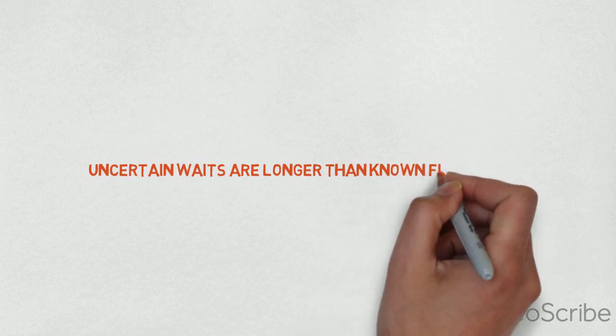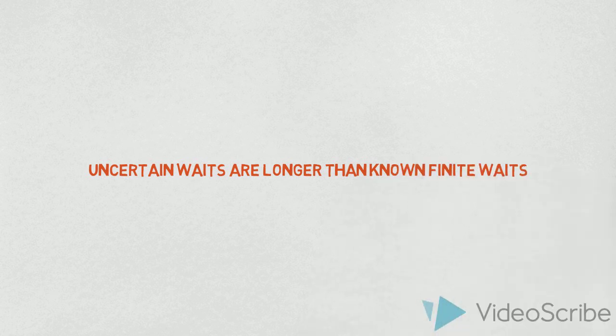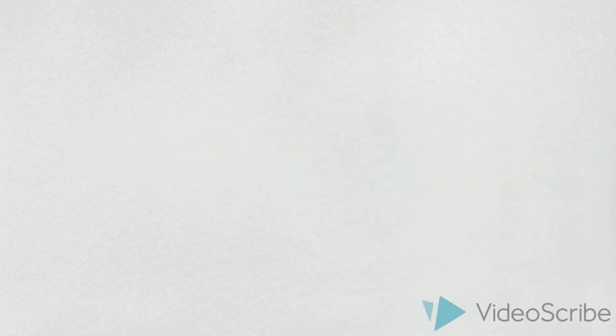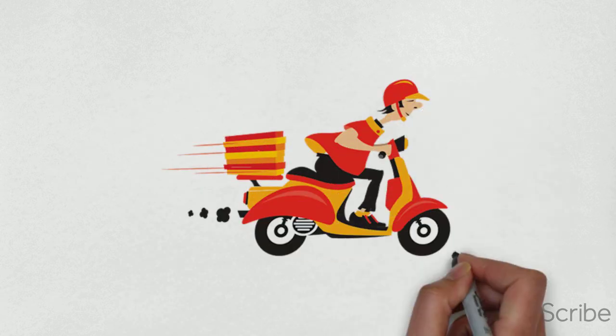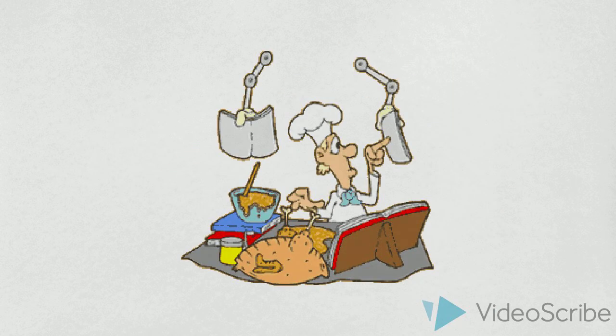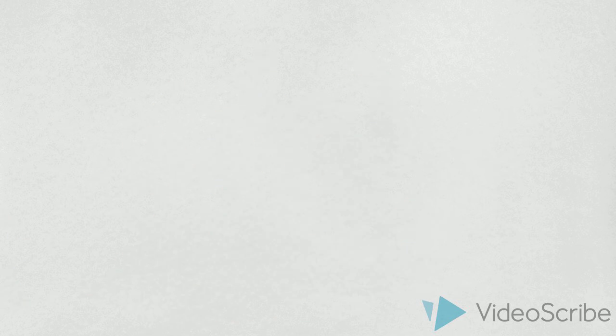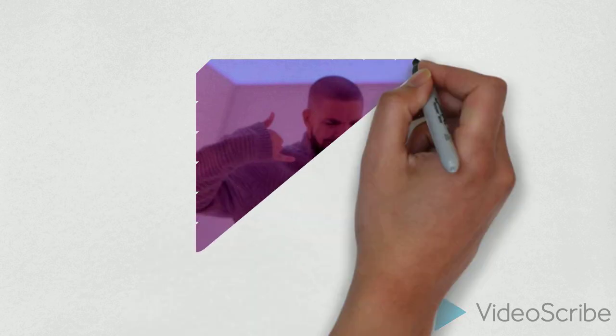The fourth point here is that uncertain waits are longer than known and finite waits. Imagine you are hungry and decide to order food home. The person on the other end of the phone tells you that they have a lot of pending orders and they will deliver it as soon as possible. You get impatient because you are hungry and also don't know when the food is going to arrive.